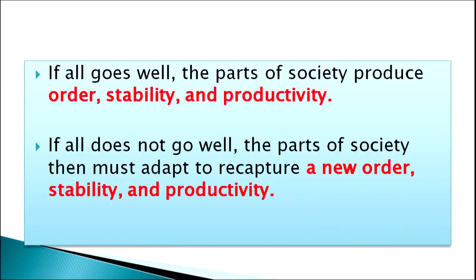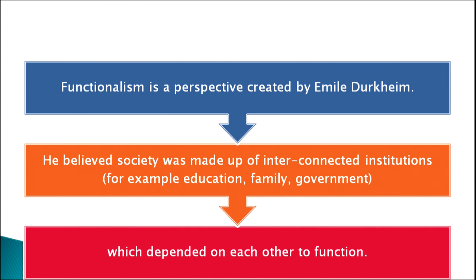The functionalist view works on the principle of interdependence. If all goes well, the parts of society produce order, stability, and productivity. If all does not go well, the parts of society must adapt to recapture a new order, stability, and productivity. Functionalism, the perspective created by Durkheim, holds that society is made up of interconnected institutions — for example, education, family, government — which depend on each other for smooth functioning of the society.